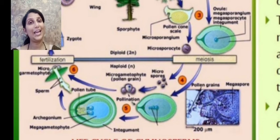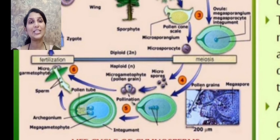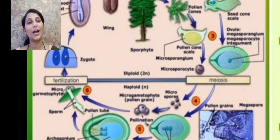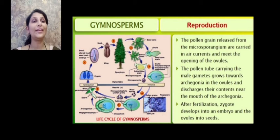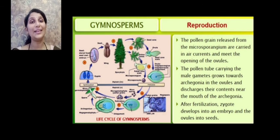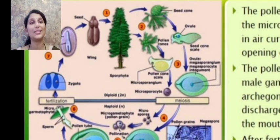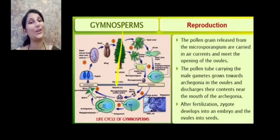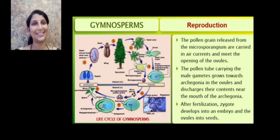The microspores develop into the male gametophyte — the pollen grains — which are released during pollination. Pollen grains are carried by air currents to the opening of the ovules. The pollen tube carrying the male gametes grows toward the archegonia present in the ovules. Near the mouth of the archegonia, fertilization occurs, the zygote develops into an embryo, and the ovule develops into a seed. The seed is not enclosed in a fruit — they are naked seeds.